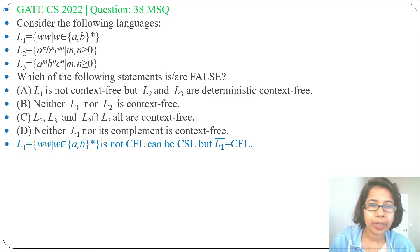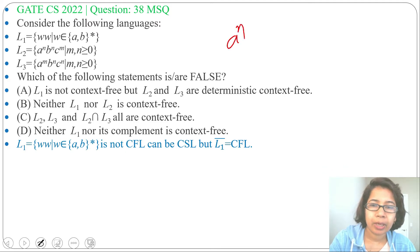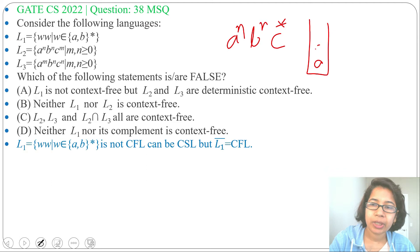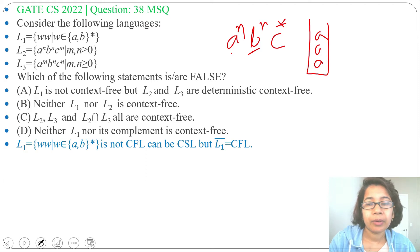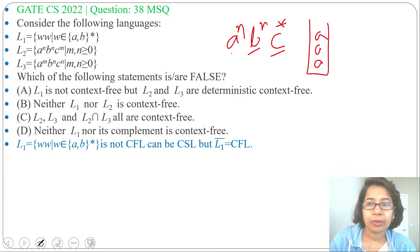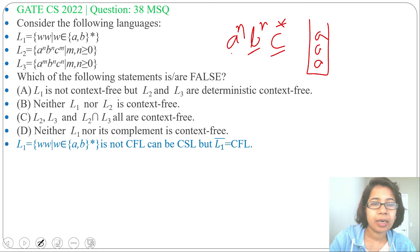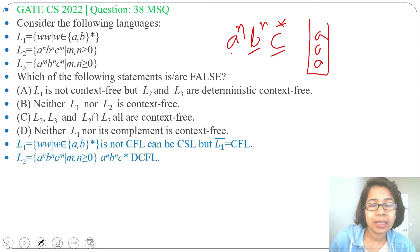Next, L2: a^n b^n c^m, with m, n ≥ 0. This is equivalent to a^n b^n followed by c*. We can use a stack — push A's, then for each B pop an A, so we compare the count of A's with the count of B's. For C we simply skip. So it's practically executable using a stack; we can design a PDA for this. This is a context-free language — in fact it is a DCFL.